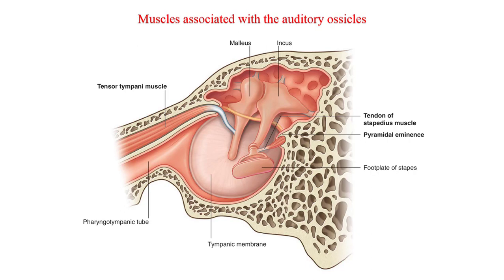Innervation of the stapedius is by the facial nerve. Tensor tympani originates in a canal superior to the bony part of the pharyngo-tympanic tube, also known as the eustachian tube or auditory tube, and inserts into the handle of the malleus. Only the tendon of the tensor tympani is found in the middle ear space — the muscle itself is housed in bone. The action of the muscle increases the concavity and rigidity of the tympanic membrane. Innervation of the tensor tympani is by the trigeminal nerve via the otic ganglion.